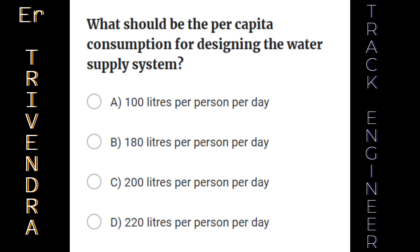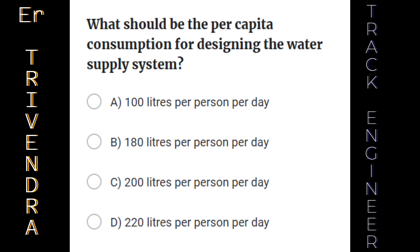What should be the per capita consumption for designing the water supply system? A. 100 liters per person per day. B. 180 liters per person per day. C. 200 liters per person per day. D. 220 liters per person per day. The right answer is: 200 liters per person per day.